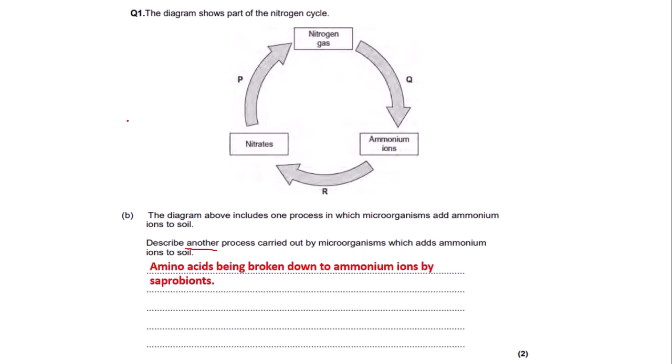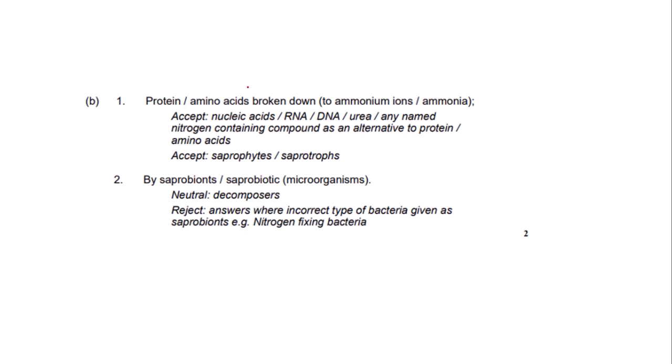I've written something else that adds ammonium ions to the soil, as the question says 'another': amino acids being broken down to ammonium ions by saprobiotic organisms. Looking at the mark scheme: first marking point — proteins or amino acids being broken down to ammonium ions or ammonia, so we would get that mark. The second point says by saprobiotic organisms. The mark scheme also notes that answers where an incorrect type of bacteria is given — such as nitrogen-fixing bacteria — would be rejected, because that refers to nitrogen fixation already mentioned in the diagram.